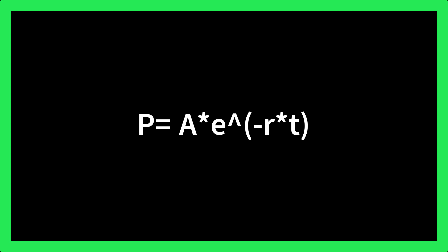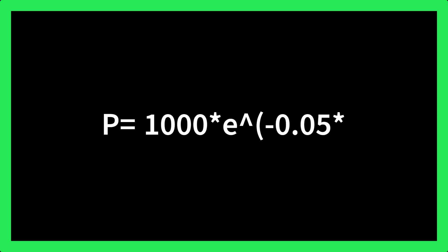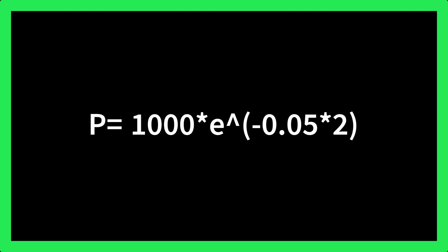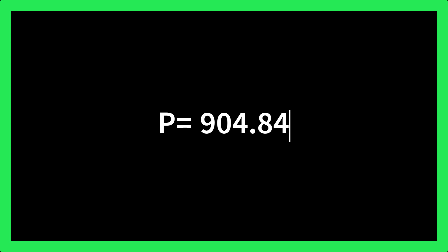For example, let's say you have a principal that is invested at an interest rate of 5% per year, compounded continuously, for 2 years, and the final amount is 1,000 rupees. Then P would be: P equals 1,000 multiplied by E raised to the power minus 0.05 into 2, equals 904.84. So the principal would be 904.84 rupees.